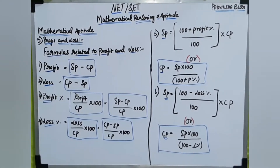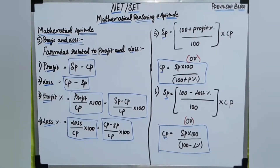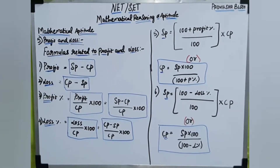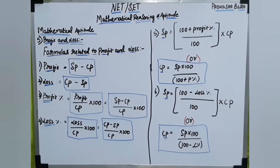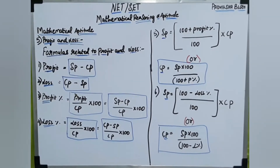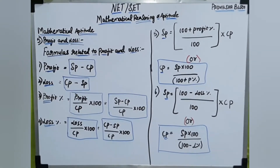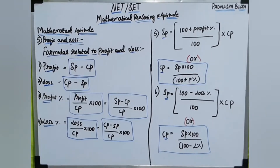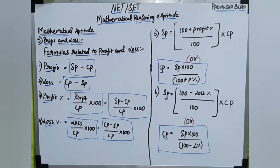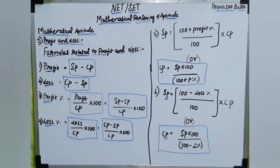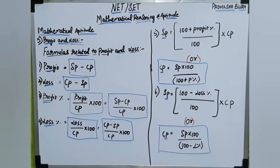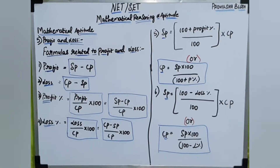Next, profit percentage: every profit percentage formula is profit divided by cost price, into 100. Since profit equals selling price minus cost price, this becomes selling price minus cost price divided by cost price, into 100. Next, loss percentage is equal to loss divided by cost price into 100 — that is, cost price minus selling price, divided by cost price, into 100.